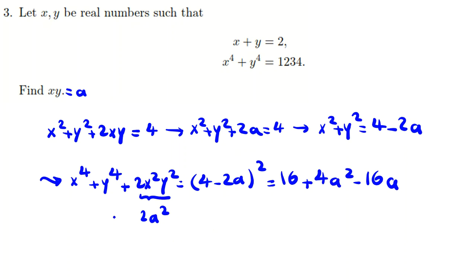Now we can say, and also we know x to the power 4 plus y to the power 4 is 1234. Now if we take all things to the right hand side, we have 2a squared, it's a quadratic formula in terms of a, minus 16a plus 16 minus 1234.